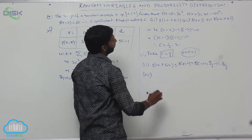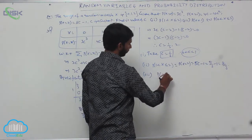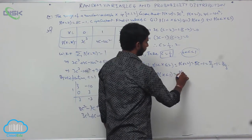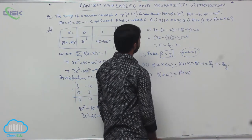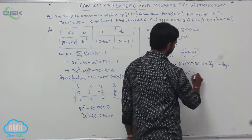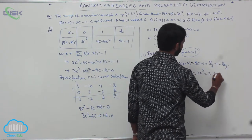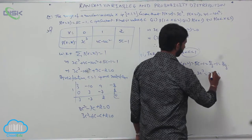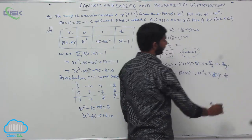Next, P(X < 1) includes only X = 0. So P(X < 1) = P(X=0) = 3C³. Substituting C = 1/3: 3 × (1/3)³ = 3 × (1/27) = 1/9.